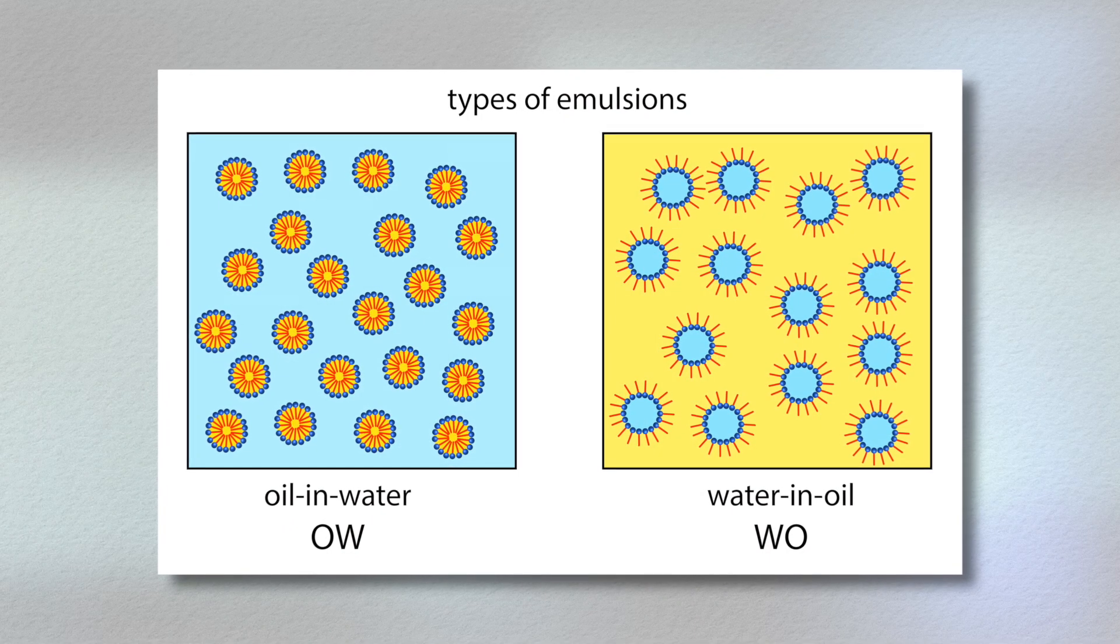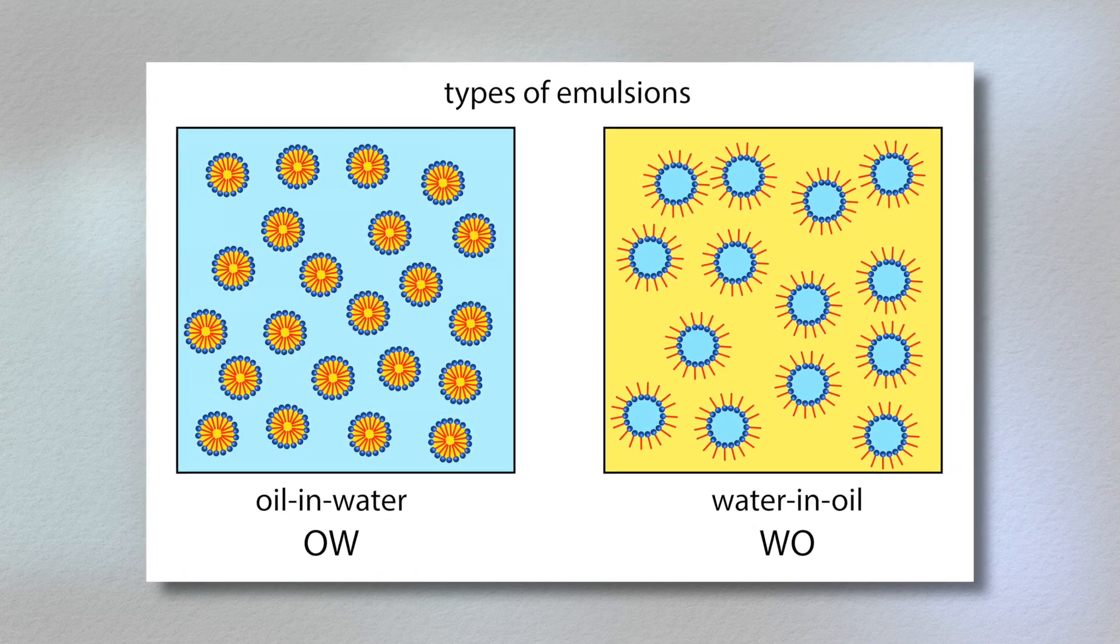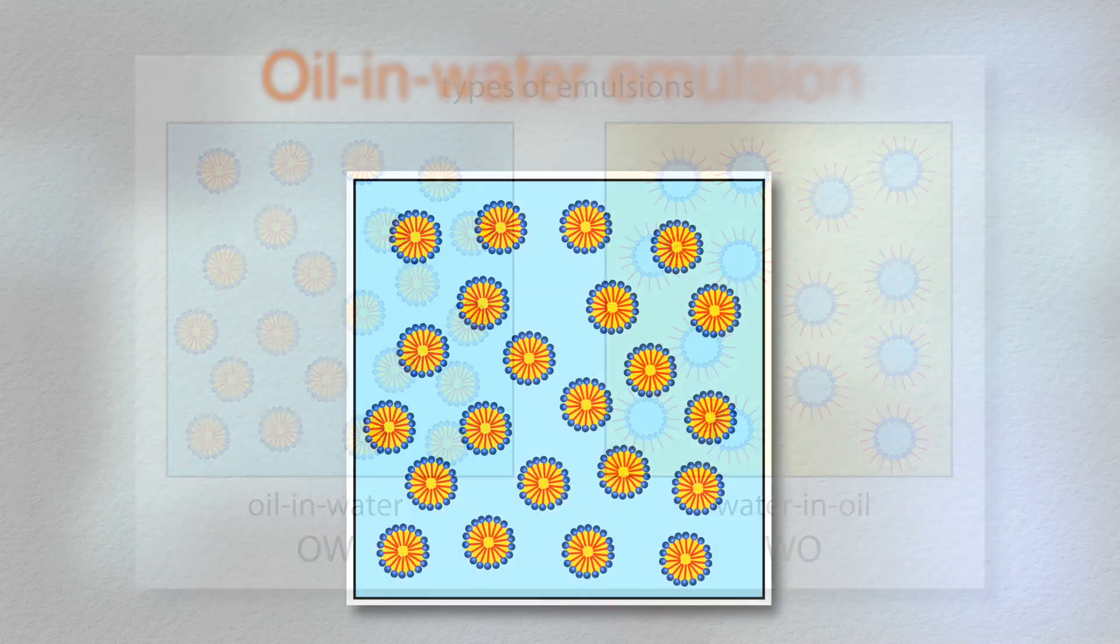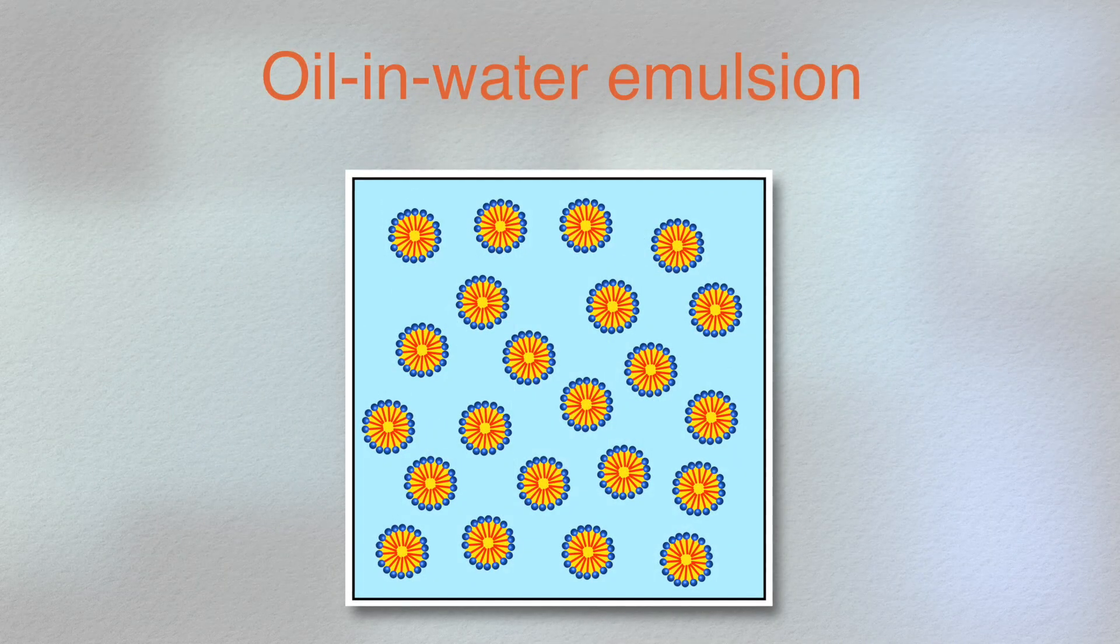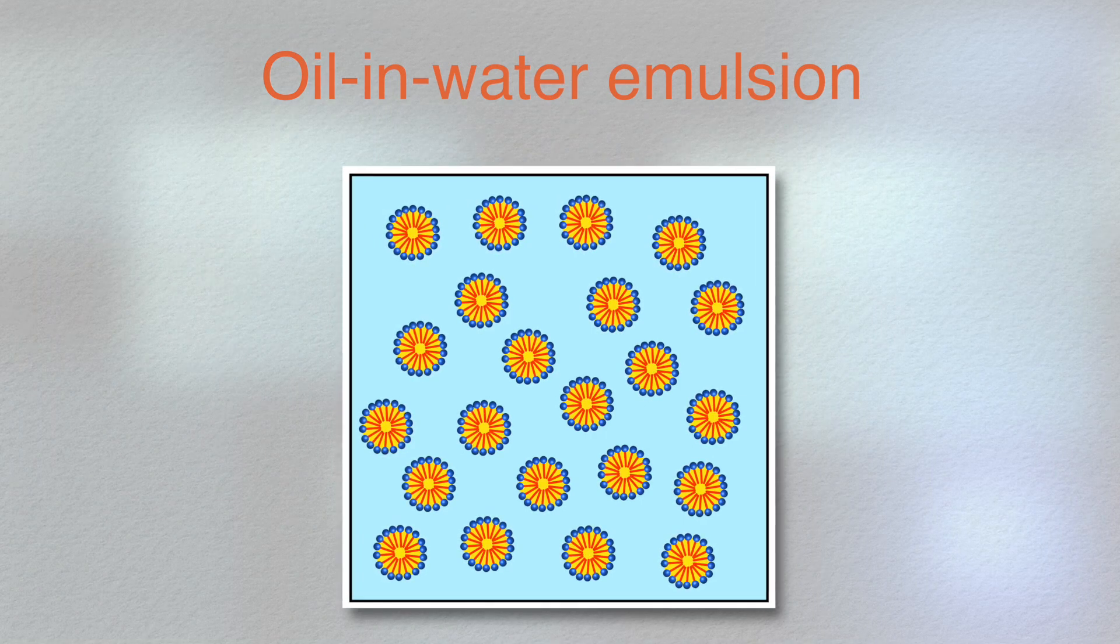Cream formulations may be oil and water emulsions or water and oil emulsions, with the former being the more common of the two. In formulating an oil and water emulsion, water is the continuous phase and oil is the dispersed phase.